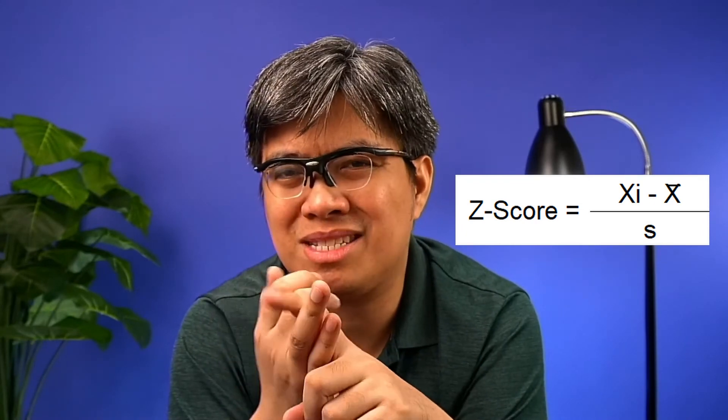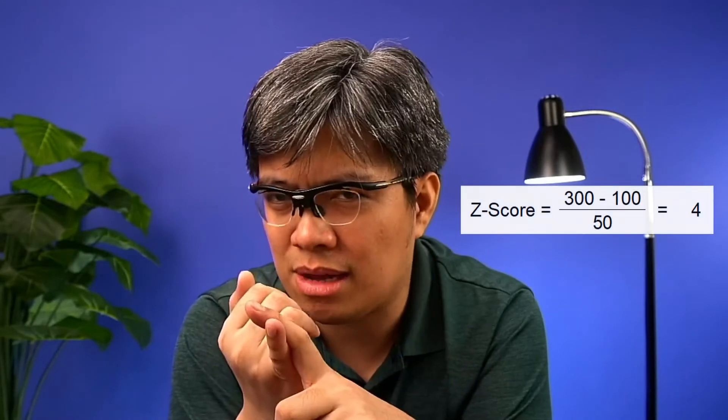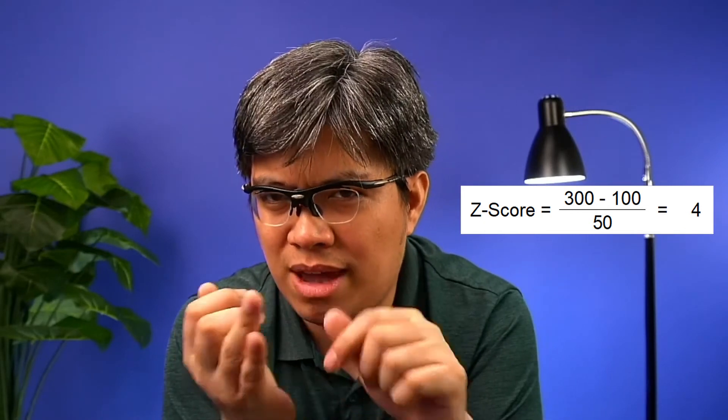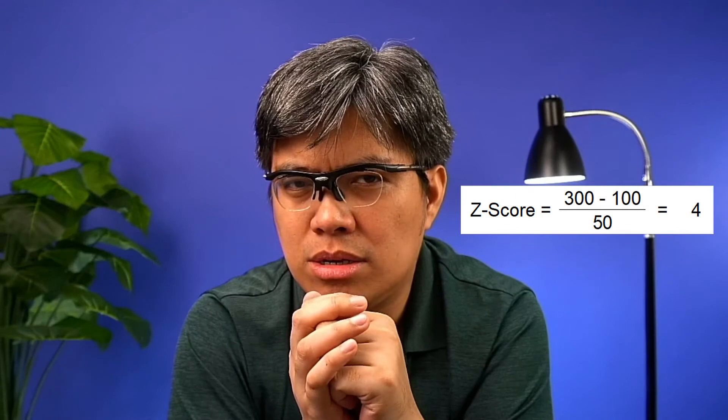Plus or minus one standard deviation comprises about 68% of the data set; plus or minus two standard deviations covers 95%; and plus or minus three standard deviations covers 99% — anything beyond that is considered an outlier. To calculate the z-score, subtract the observed value minus the sample mean, divided by the standard deviation. In this example: (300,000 − 100,000) ÷ 50,000 = 4. Since 4 is beyond plus or minus three, it is considered an outlier — a top performer worth noticing and potentially replicating.